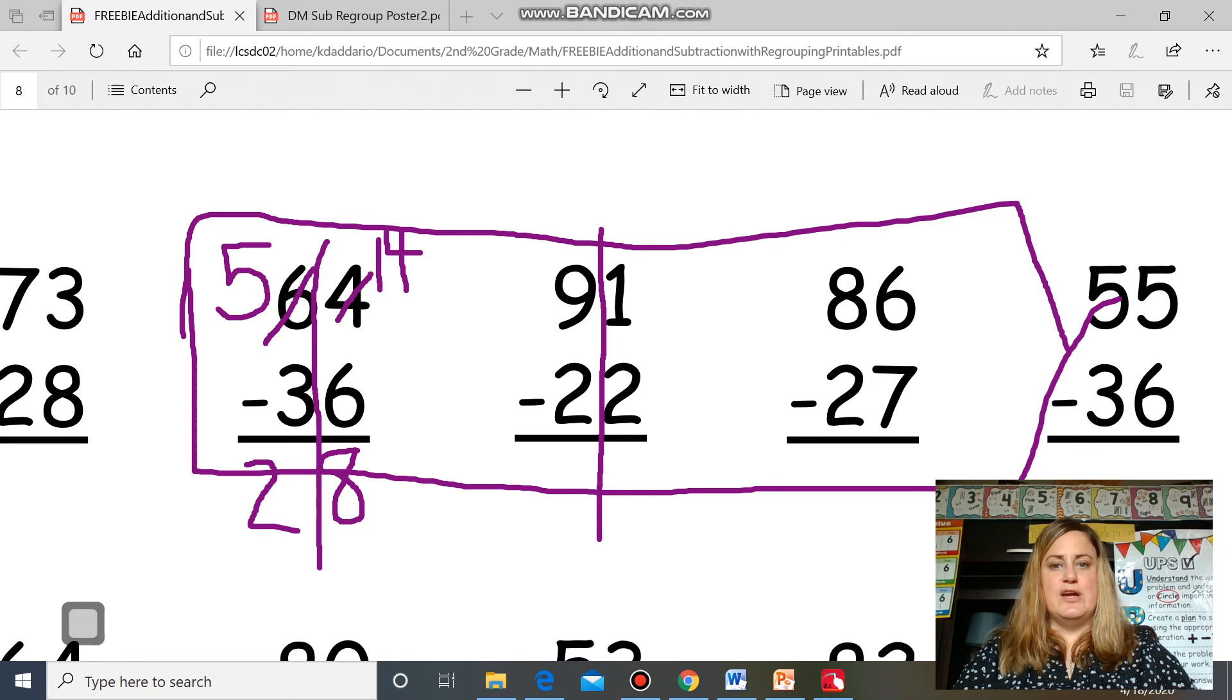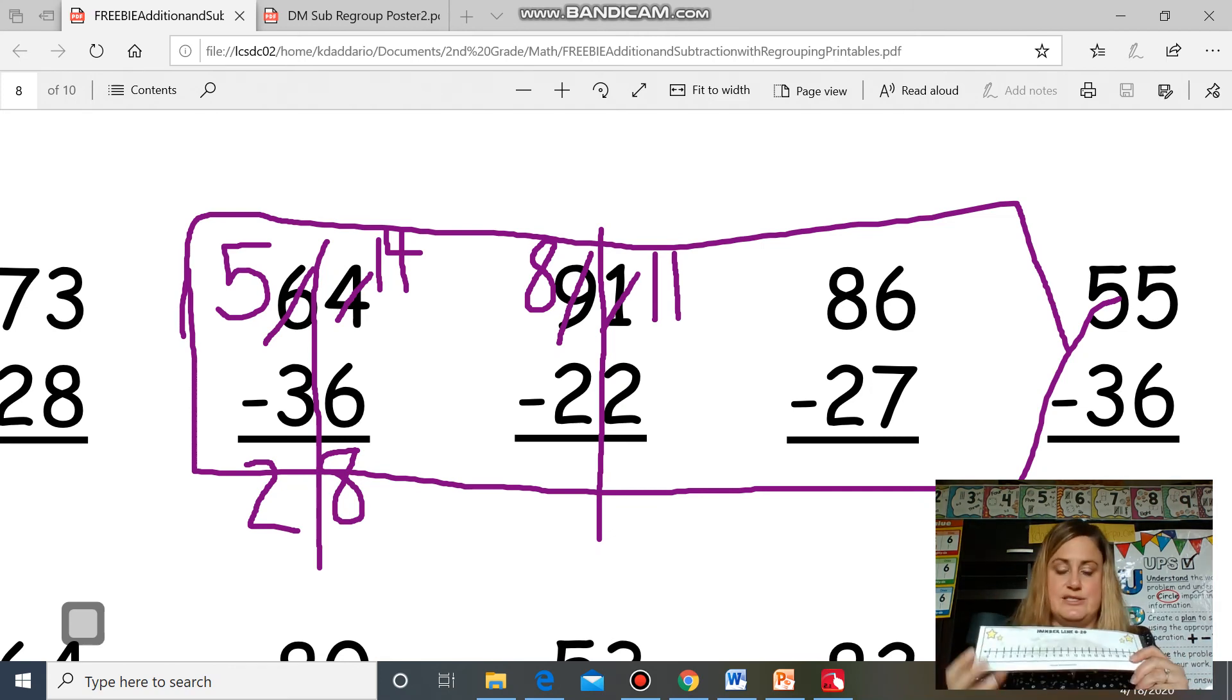I drew my line down my center. I know that I need to start in my ones place and I know I need to say to myself more on top or more on the floor. I see there's more on the floor. So I need to go next door. So I cross off my nine. Taking one away, I get one more 10. So take one away. Now I have eight left. Take that 10 that I just took from next door and I'm going to put it with my one to make 11 because 10 plus one is 11. Now I can subtract 11 minus two.